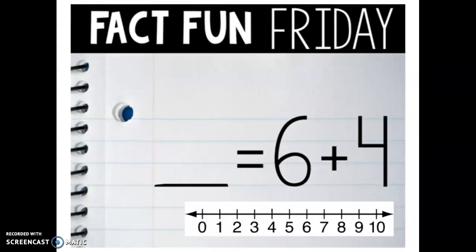Next Fact Fun Friday is blank equals six plus four. And let's use our number line to help us solve this one. So blank equals six. So I am going to find the number six right here on my number line. And I am going to put a dot. Now it is telling me to add four. So that means that I need to hop four times.